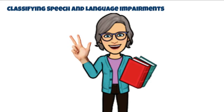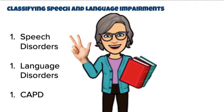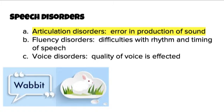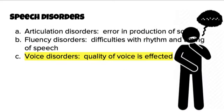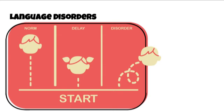When we classify speech and language impairments, we use three categories: speech disorders, language disorders, and central auditory processing disorders. Within speech disorders, there are three subcategories: articulation disorders, which are errors in the production of sound; fluency disorders, which are difficulties with the rhythm and timing of speech; and voice disorders, where the quality of the voice is affected.